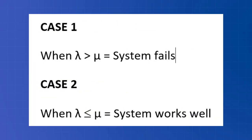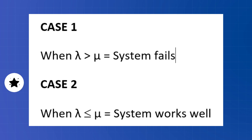There are certain special cases. The first case is when lambda is greater than mu, meaning the arrival rate is more than the service rate — in this case the system will fail. The second case is when lambda is less than or equal to mu, meaning the arrival rate is less than or equal to the service rate — in this case the system works well.